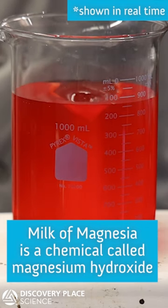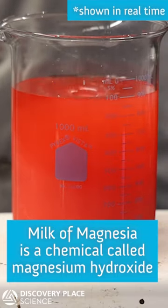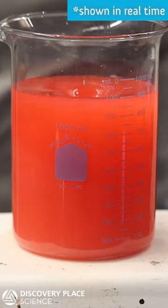Milk of magnesia is actually a chemical called magnesium hydroxide, and it's used to treat stomach aches because it neutralizes acid.